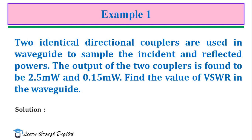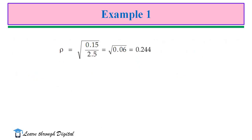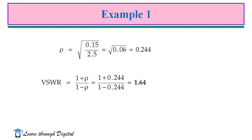First we find the reflection coefficient. Rho is equal to the square root of PR by PI. PR and PI are both given in the problem. Substituting the values of PR and PI, we get the reflection coefficient as 0.244. Now, VSWR is equal to (1 + rho) / (1 - rho) = (1 + 0.244) / (1 - 0.244), which equals 1.64. The answer is 1.64.